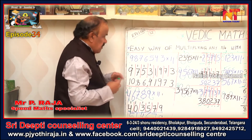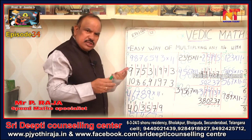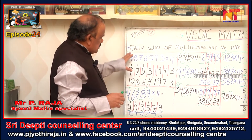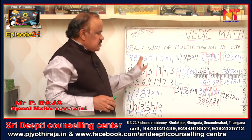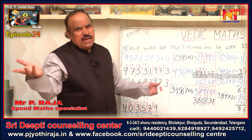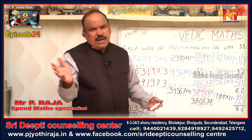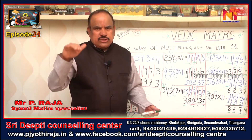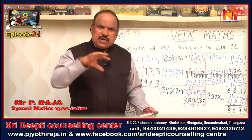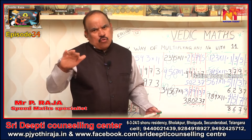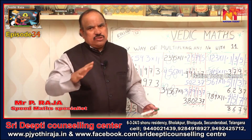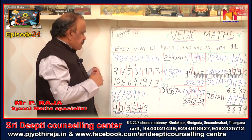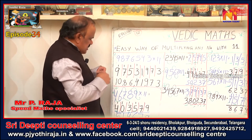Now let us take a seven-digit number. This method is applicable here. One more thing — for understanding purposes I have written it in sequence, but it can be any random number also, like 8978 or 76,46,033 multiplied by 11. You can get the answer in one step.